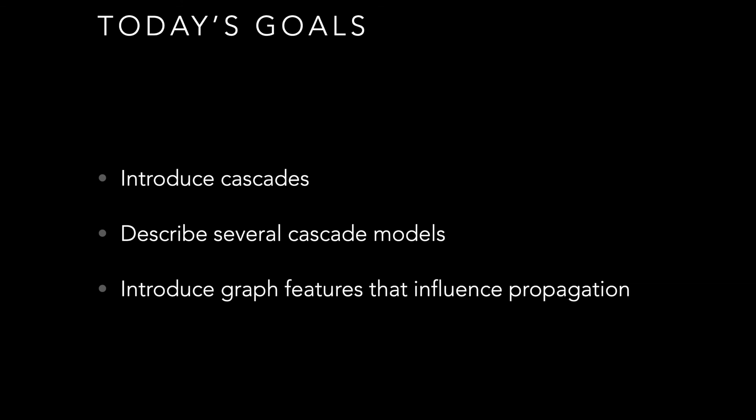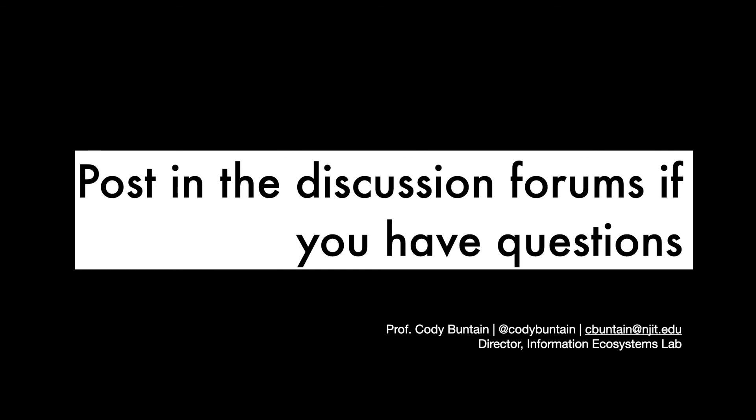We'll end there. We've talked about a number of different kinds of cascade models, what cascades mean, and features of graphs that influence how quickly cascades spread. With that we'll end our discussion of dynamic networks and contagion and propagation. Thank you very much.